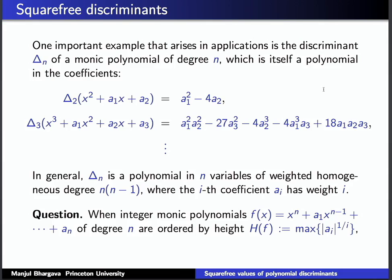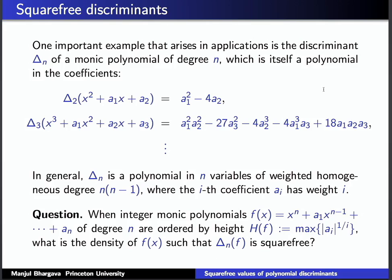The question is: when you take all integer monic polynomials xⁿ + a₁xⁿ⁻¹ + ⋯ + aₙ ordered by their height — defined as the maximum of |aᵢ|^(1/i) so that all degrees are comparable — what is the density of monic integer polynomials such that the discriminant is square-free? In particular, is the density even positive? That also was not known. This is a classical question in number theory.